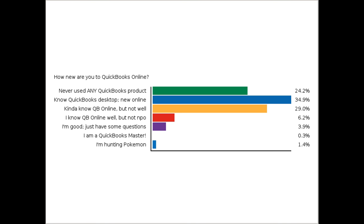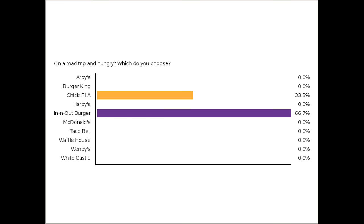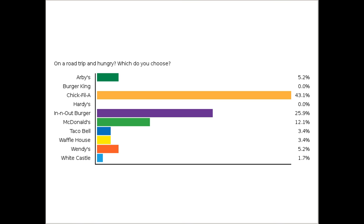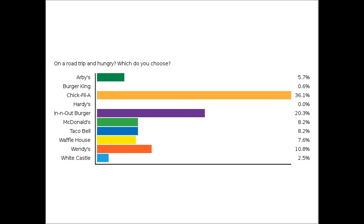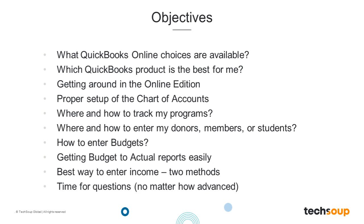There's one more completely irrelevant poll — you're on a road trip and you're hungry, where would you eat? Options include Arby's, Burger King, Chick-fil-A, Hardee's, In-N-Out Burger, McDonald's, Taco Bell, Waffle House, Wendy's, and White Castle. Chick-fil-A is very popular. Some folks are saying we should have a 'none of the above' option since many people don't eat fast food — which is valid. Even those of us that don't eat fast food usually end up going on a road trip.